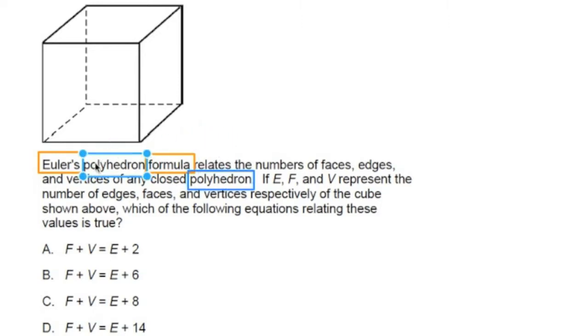A polyhedron is a three-dimensional shape made up of polygons, and a cube is a type of polyhedron. So I'm going to highlight that cube there. It's a type of polyhedron.